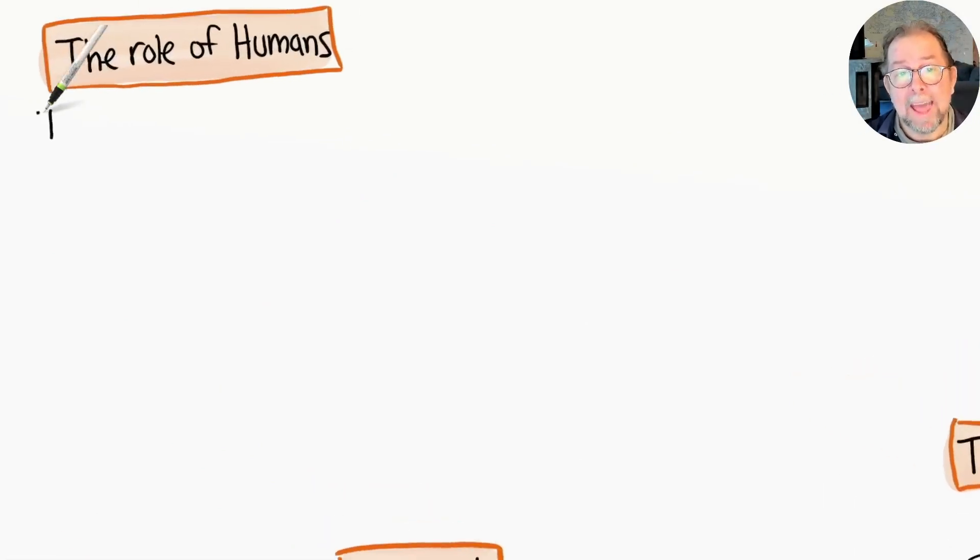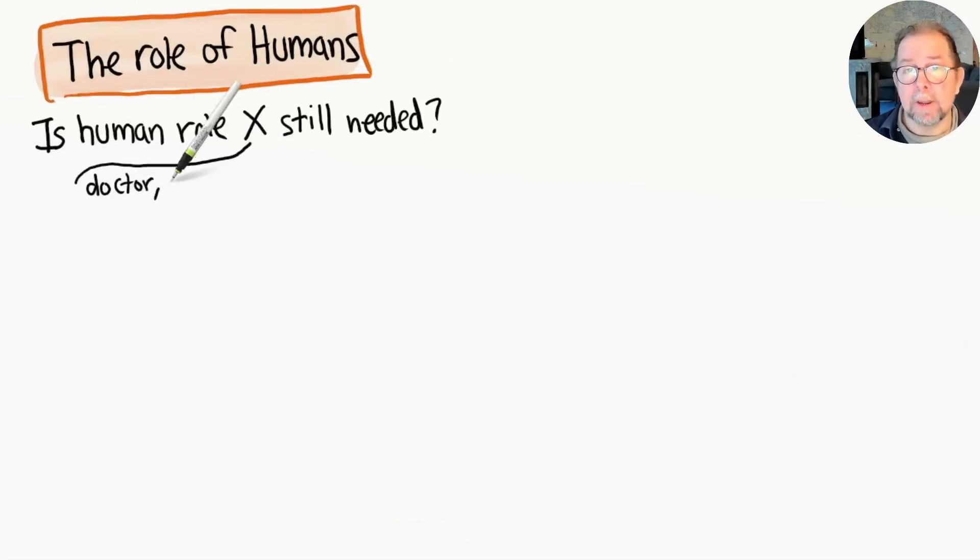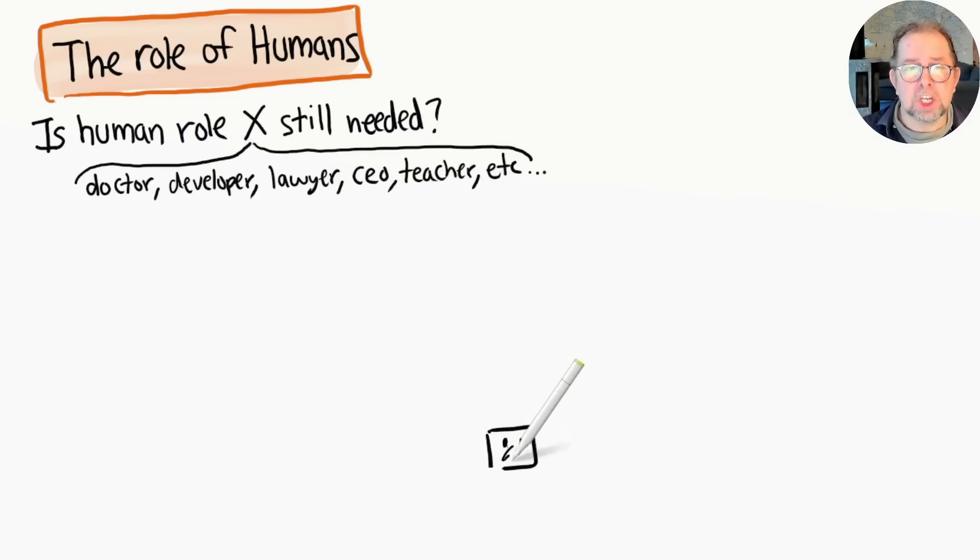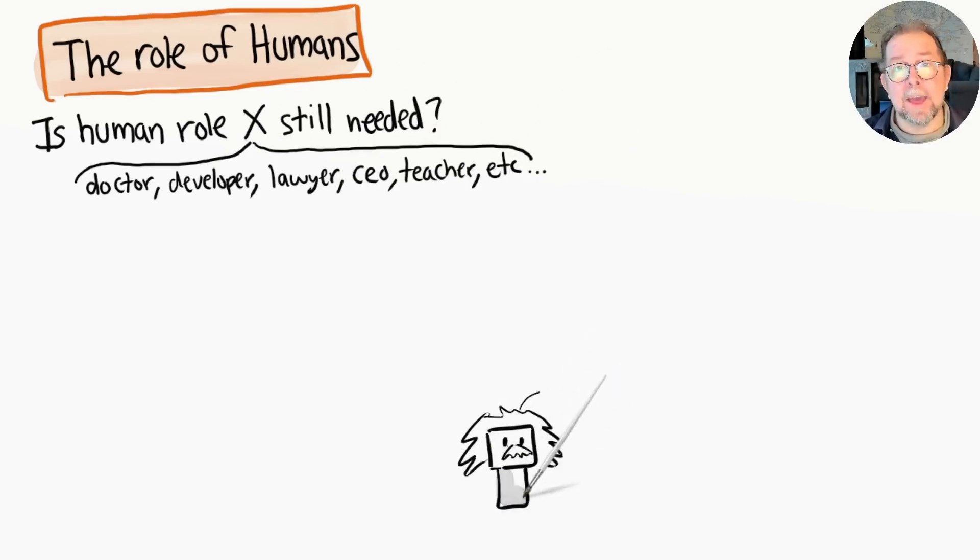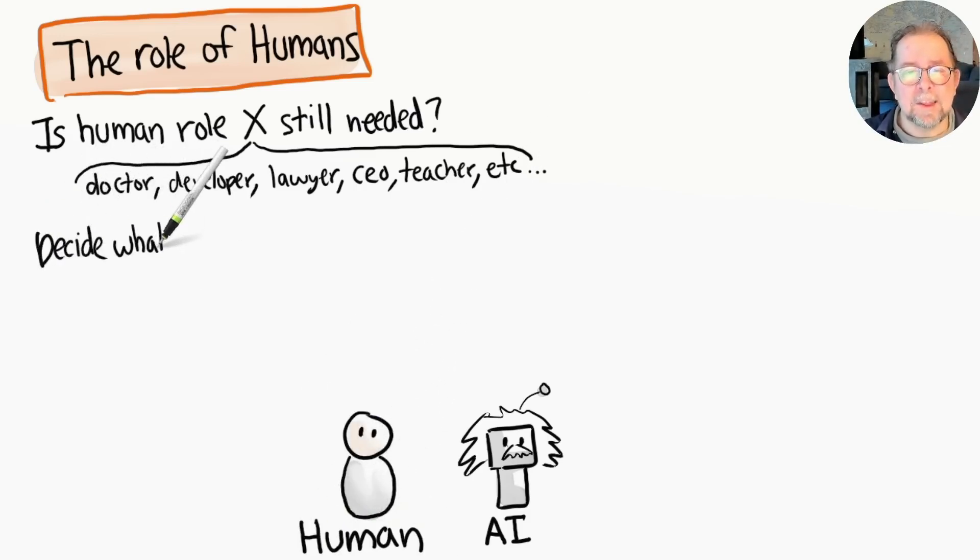So one important question is: Is human role X needed in the age of AI? For example, are doctors needed? Developers? Lawyers? CEOs? Whatever. So this question becomes more and more relevant as the AI capabilities improve. Well, some jobs will disappear for sure, but for most roles I think we humans are still needed.